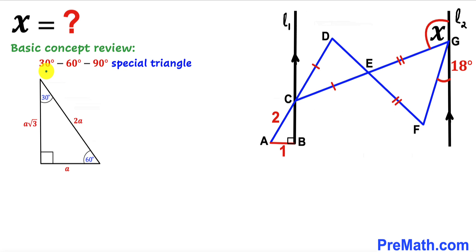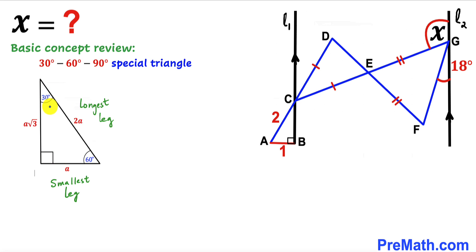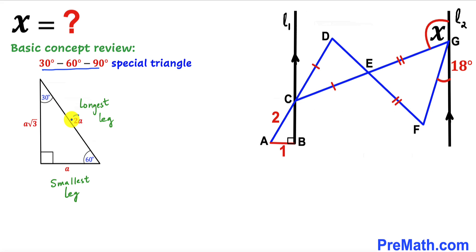Now let's talk about the 30-60-90 special triangle. The 30° angle is the smallest and the 90° angle is the largest. The side opposite the smallest angle is the smallest leg and the side opposite the largest angle is the longest leg. In a 30-60-90 triangle, the longest leg is twice the smallest leg: if the smallest leg is a, the longest leg is 2a and the third leg is a√3.